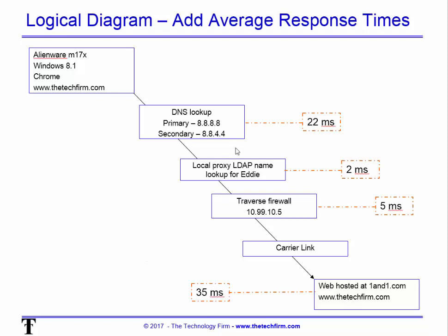From that diagram we can add response times: the DNS lookup took 22 milliseconds, the LDAP name resolution took 2 milliseconds, traversing the firewall took 5 milliseconds, then there's the carrier link, then techfirm.com — total time comes to 35 milliseconds. At a quick glance you can see the biggest sources of latency are DNS and the server. We can't do much about the server, but maybe we can set up a local DNS, proxy DNS, or DNS forwarder, which would cut that time down tremendously.